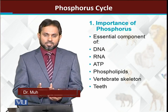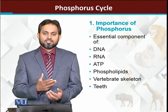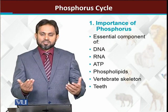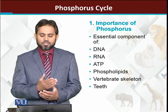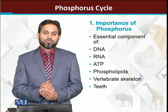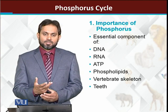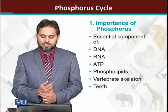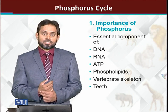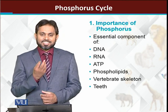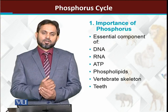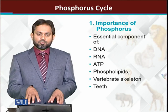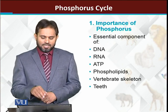ATP has three phosphates, meaning phosphate is part of the energy molecule without which life cannot exist. So phospholipids — membrane lipids — also contain phosphate in them. Similarly, the skeleton of vertebrates, our bones and our teeth, also contain phosphorus. So phosphorus is an important component of living organisms.